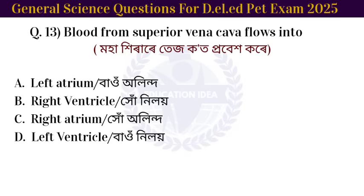Next question: blood from the superior vena cava flows into the right atrium.